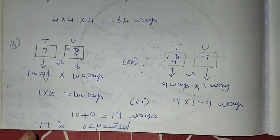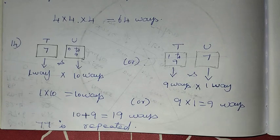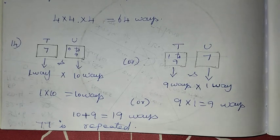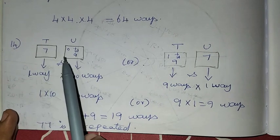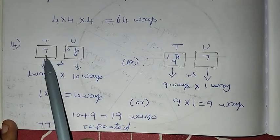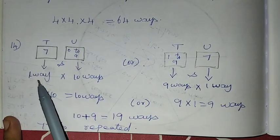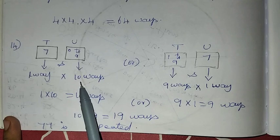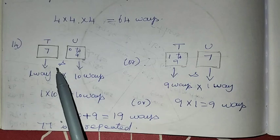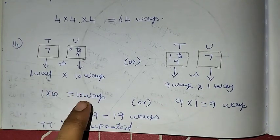Now, the question is about 2-digit numbers. You have units place and tens place. Units place can be 0 to 9 — that's 10 ways. Tens place can be 1 to 9 — that's 9 ways, since a 2-digit number cannot have 0 in the tens place. Multiplying: 1 way into 10 ways is nothing but 10 ways.